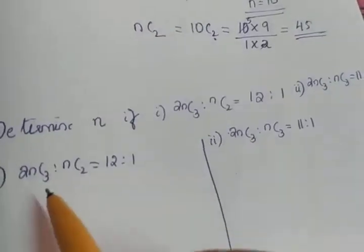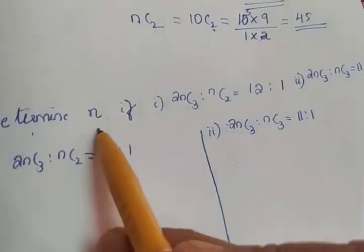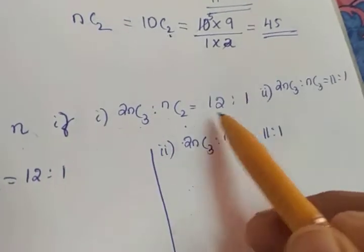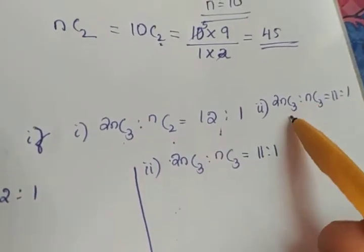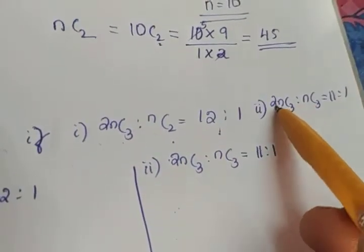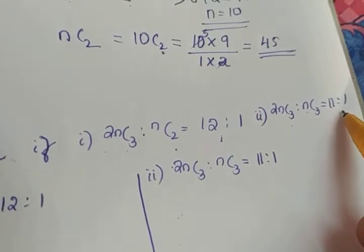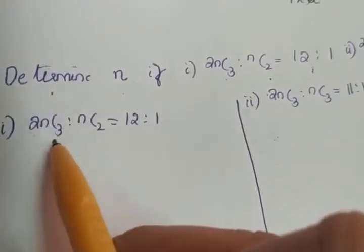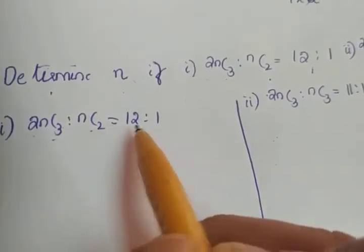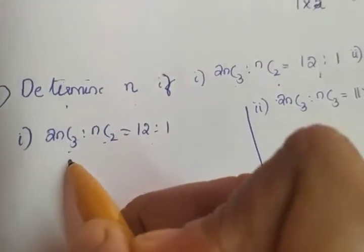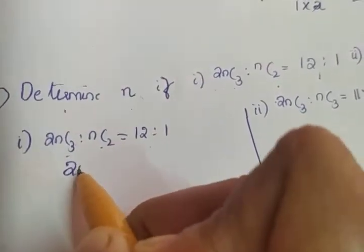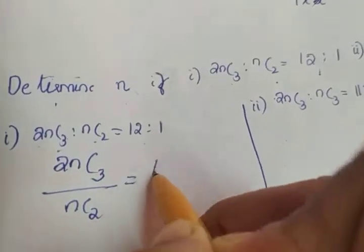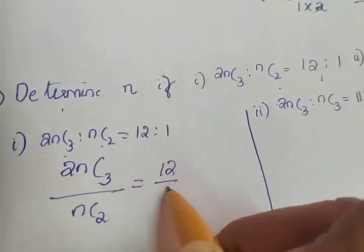Moving to the second question: determine N if 2NC3 to NC2 equals 12 to 1. There is also a second part: 2NC3 to NC3 equals 11 to 1. We take the first part. Since 2NC3 to NC2 equals 12 to 1, we can write 2NC3 divided by NC2 equals 12.